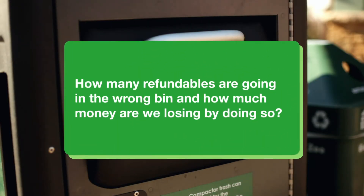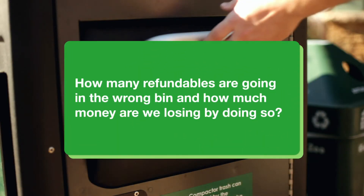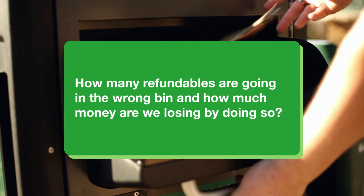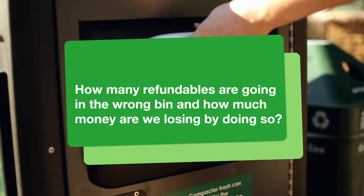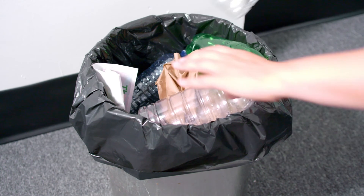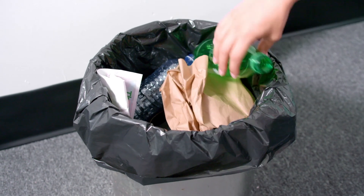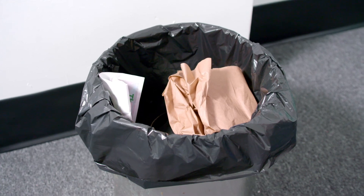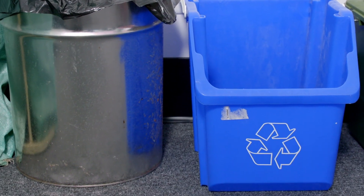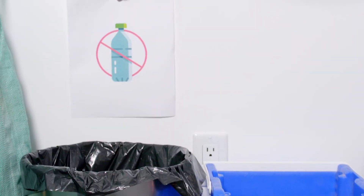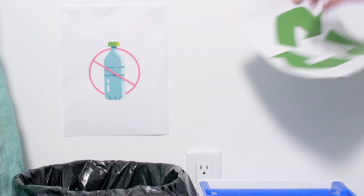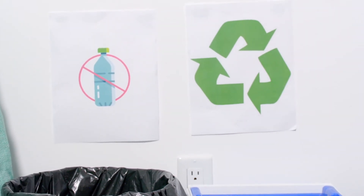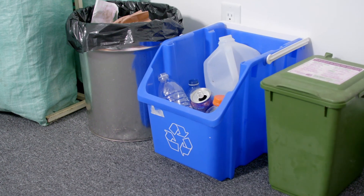Say for example, you wanted to know how many refundables are going in the wrong bin and how much money we are losing by doing so. A project like this would entail counting the number of refundables in the wrong bins. It is important to collect data more than once for accurate results. You could then try to improve the system by leading an awareness campaign, adding more signage, and or bins. After this, you can recount to track your success.